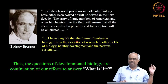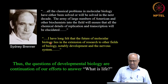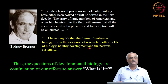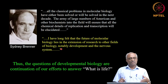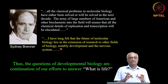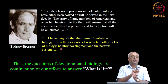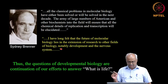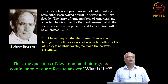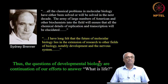Brenner wrote: all the classical problems in molecular biology have either been solved or will be solved in the next decade — this was in 1963. He felt that a large number of biochemists would fill in the chemical details. His big question was: the future of molecular biology lies in extension of research to other fields of biology, notably development and the nervous system. The point is that what he described was at a cellular level; how different cells interact among themselves in a multicellular context — that is what development is.